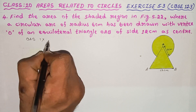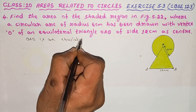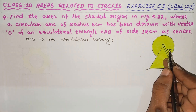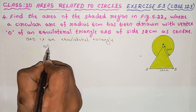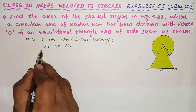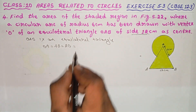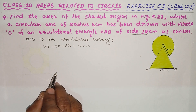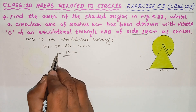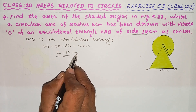OAB is an equilateral triangle. The side of OAB is equal to 12 cm.